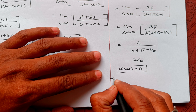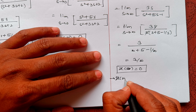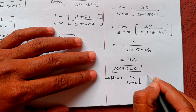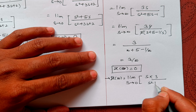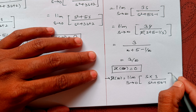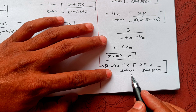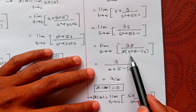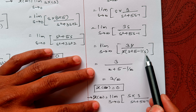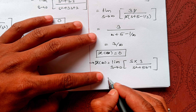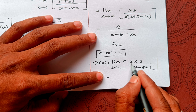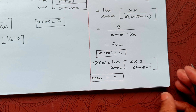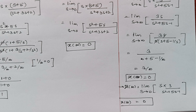So the initial value is 0. Now let's find the final value: x(∞) = limit as s tends to 0 of s into 3 / (s²+5s−1). Taking s common, s cancels, leaving 3 / (s+5−1/s). Substituting s=0, we get the final value as 0. So both values for the second example are 0.